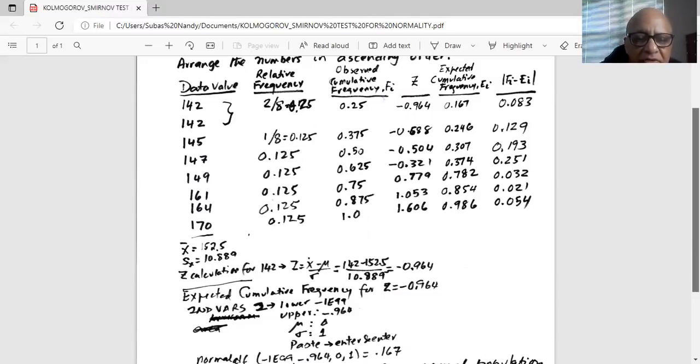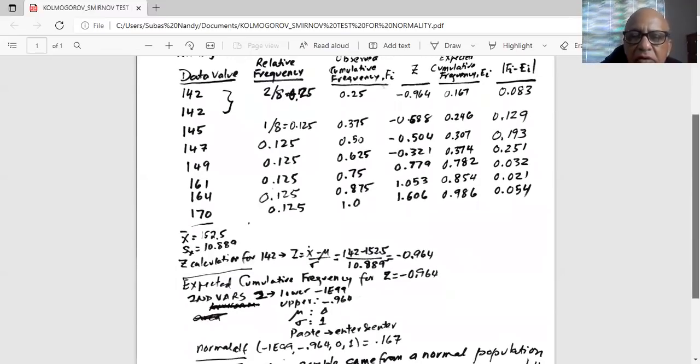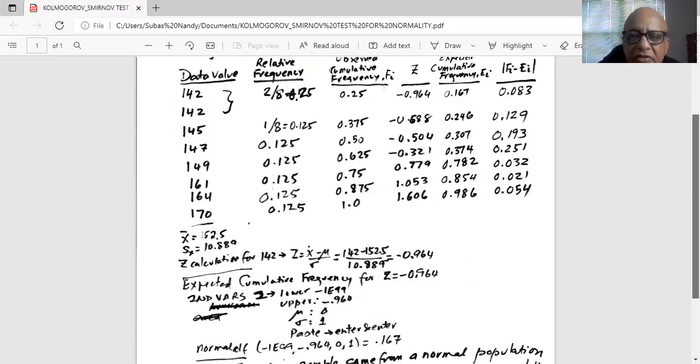I repeat the process for the next z score which is minus 0.688. So I again go to second VARS 2 which is normal CDF. Lower, I do not change it, it is minus 1 E 99. Upper now becomes minus 0.688. Mu 0, sigma 1. And I do the normal CDF and I get an answer of 0.246. That means 24.6% of the data is below the z score of minus 0.688. I repeat the process for the other z scores.